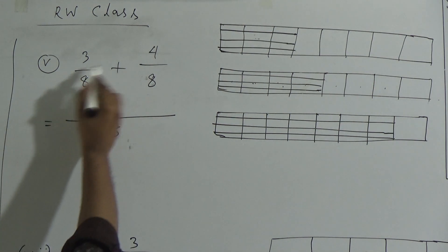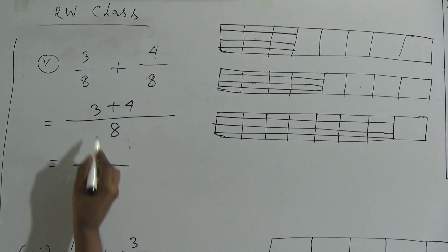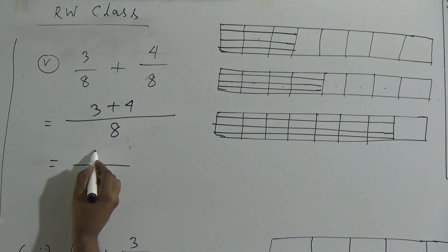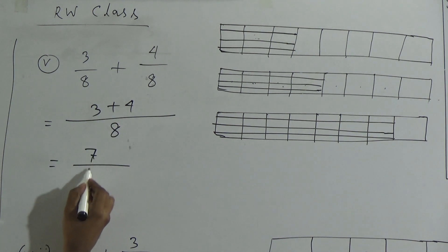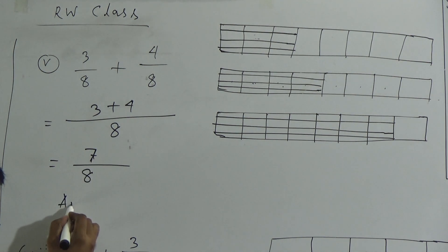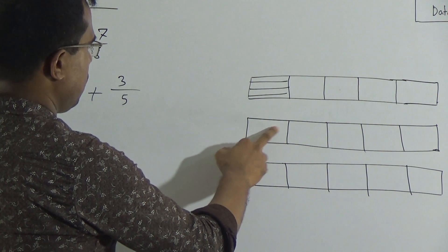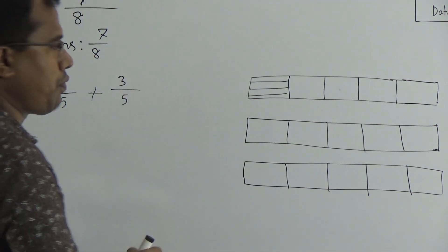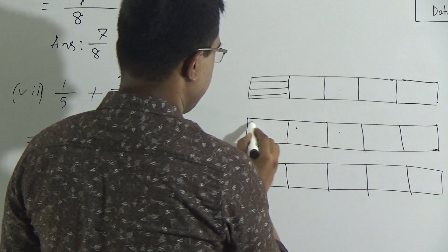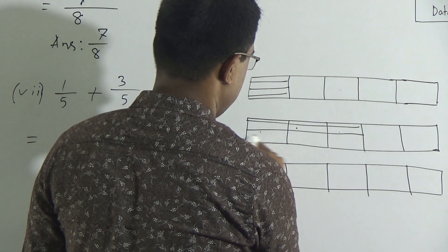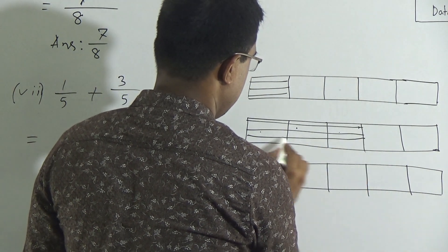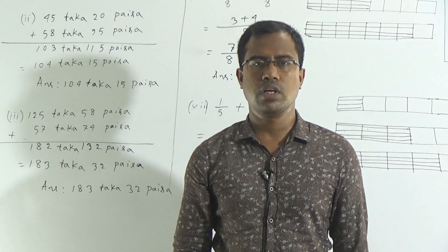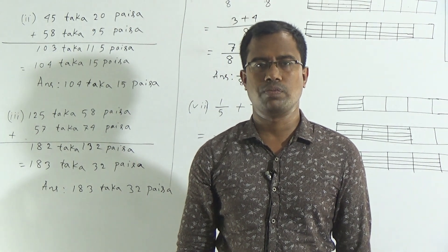Now we will add 125 taka 58 poisha with 57 taka 74 poisha. Starting with poisha: 8 plus 4 is equal to 12. From 12 we will write 2 and carry 1. Then 1 plus 5 plus 7 is equal to 13, giving us 132 poisha.